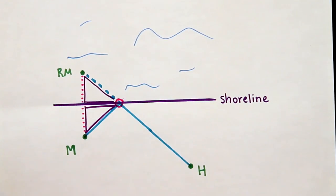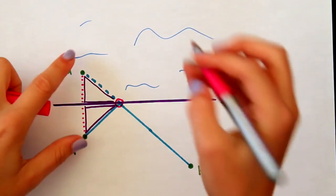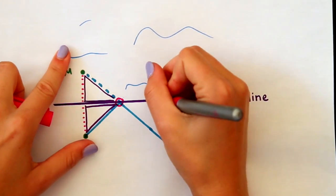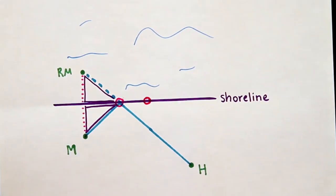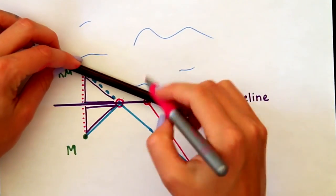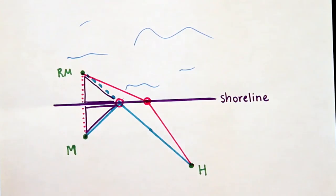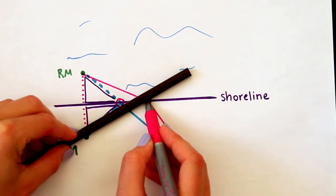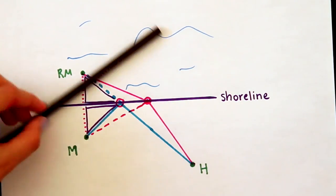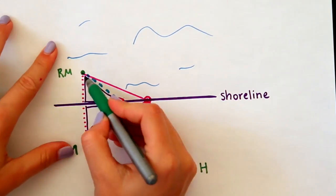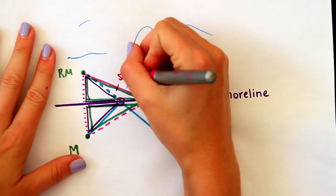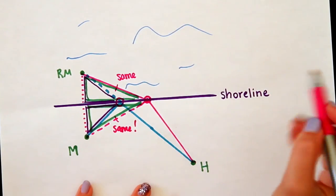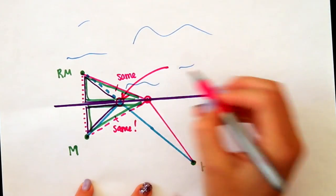So this location is looking promising. We can see that any other location of the pier — like over here — would make the Hogsmeade to reflected Mordor distance longer. And we can show again that it's the same distance as Hogsmeade to pier to Mordor, which means any other location of the pier would make the path longer. Therefore this must be it.